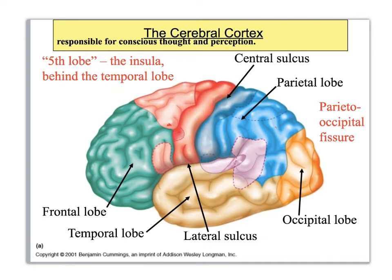Here we are looking at the cerebrum. You've got two different ways to refer to it: you can call it the right and left cerebrum, or the right and left cerebral hemispheres. The cerebrum is broken up into gray matter and white matter. The cerebral cortex is going to be the outermost part, which is your gray matter — mostly on the outside, although there is some inside — and then the white matter is on the inside.